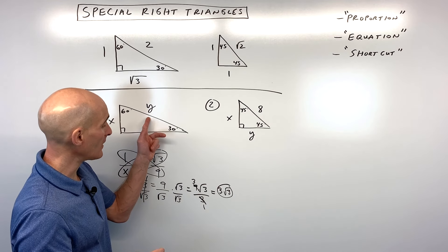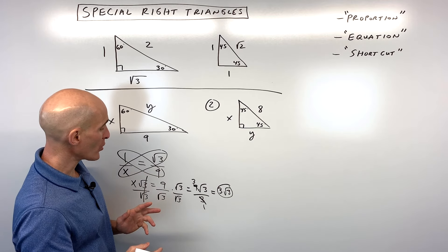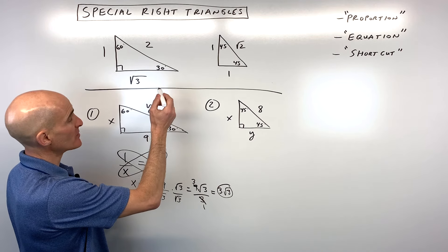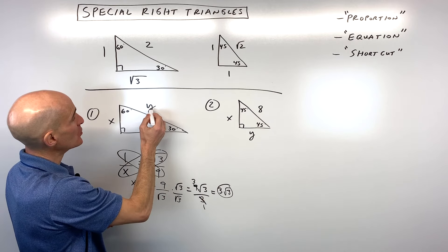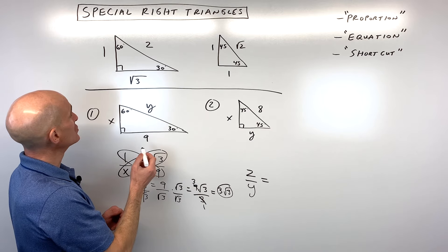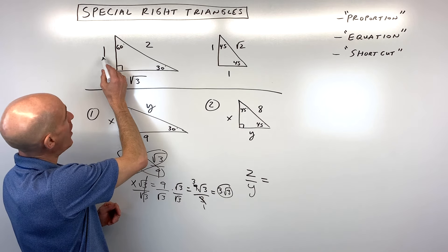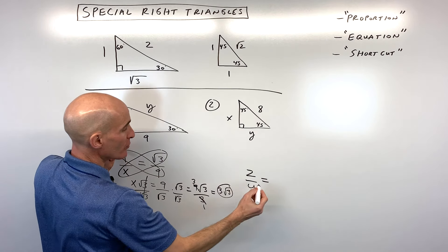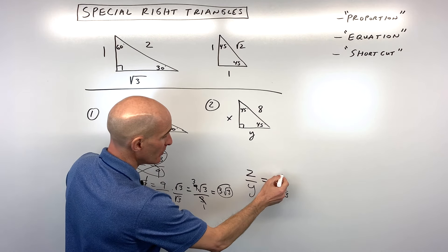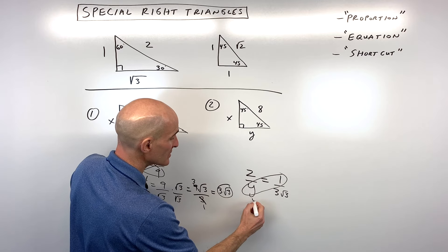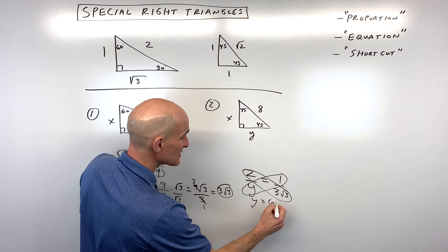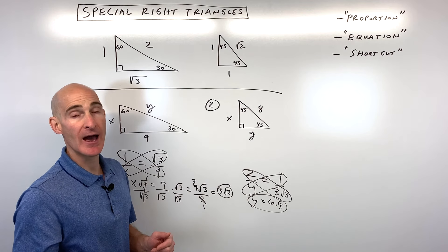Now if we want to solve for y, we can make another proportion comparing corresponding sides. I'm going to say 2 is to y as 1 is to 3 square root of 3. Cross-multiplying gives 1 times y equals 2 times 3 square root of 3, which is 6 square root of 3. So y equals 6 square root of 3.